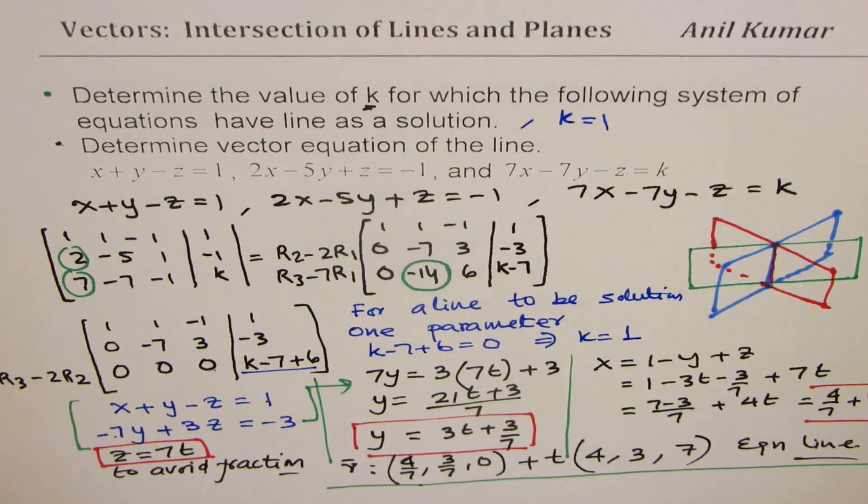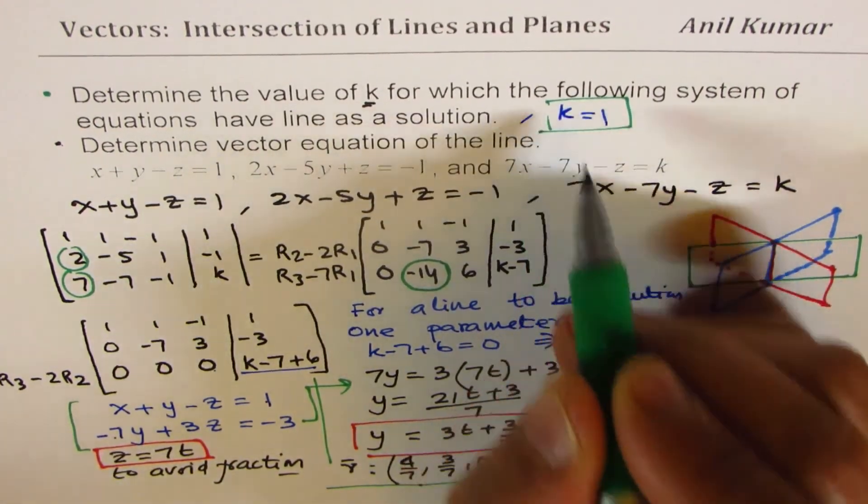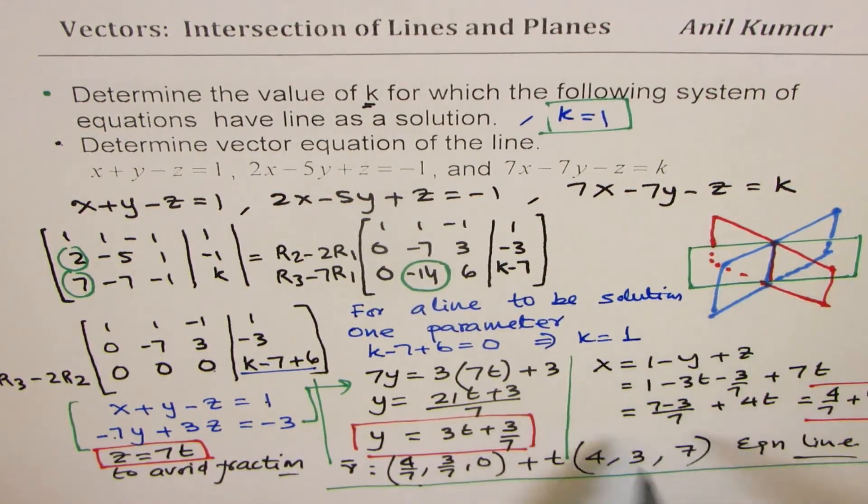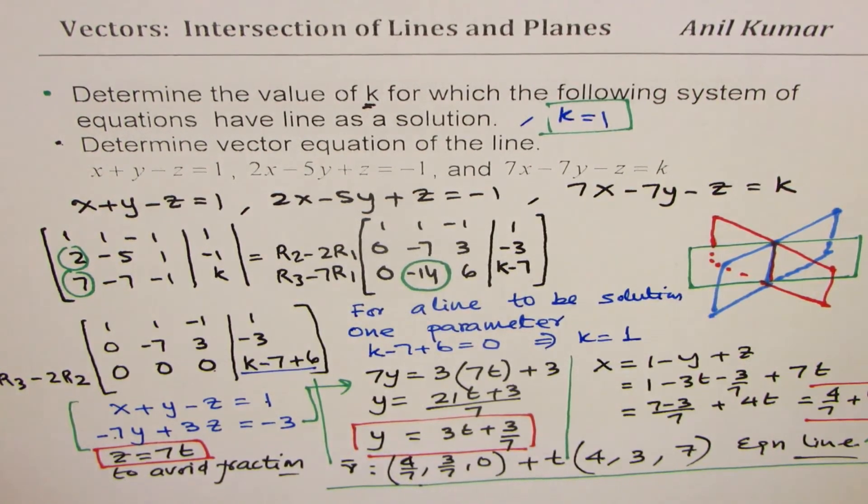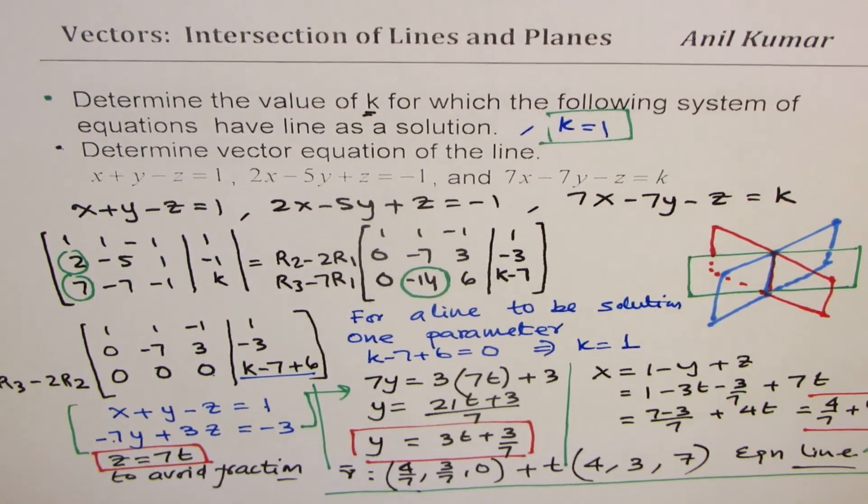So, I hope the steps are absolutely clear. So, for k equals to 1, we do have a condition where all the three planes intersect in a line. And the equation of the line will be vector equation as given here. So, I hope that makes sense. Feel free to write a comment, share your views, and if you like and subscribe my videos, that would be great. Thank you, and all the best. Thank you.